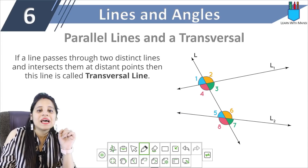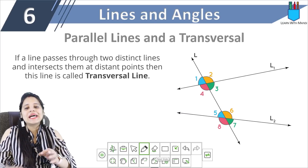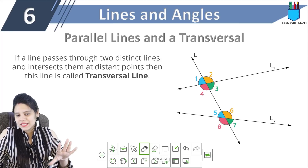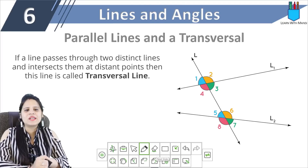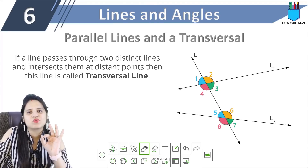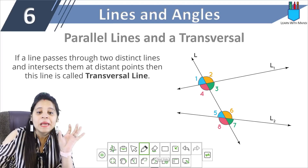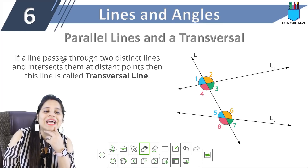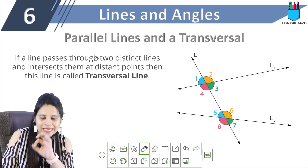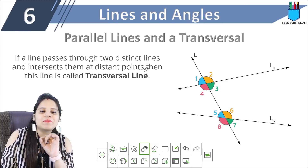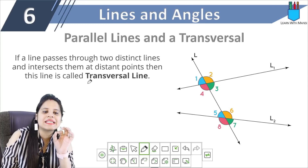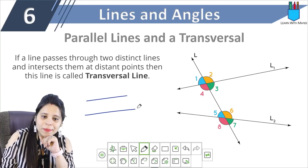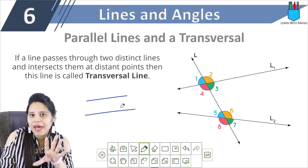Next, we have parallel lines and transversal. We will study parallel lines and transversal lines. If a line passes through two distinct lines and intersects them at distinct points, then this line is called a transversal — whether those lines are parallel or non-parallel.